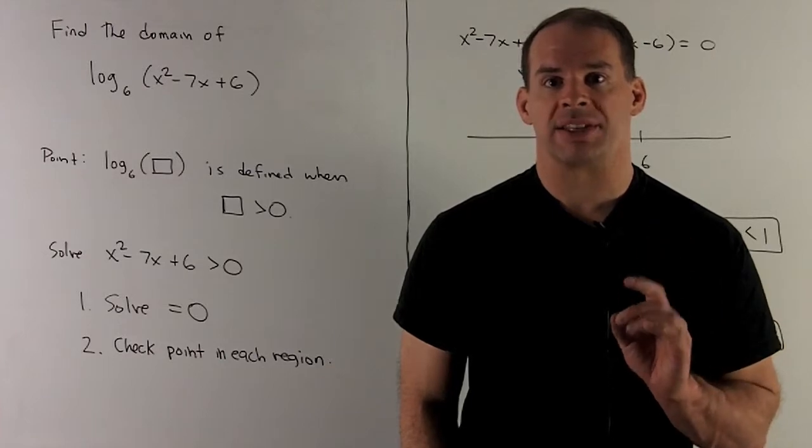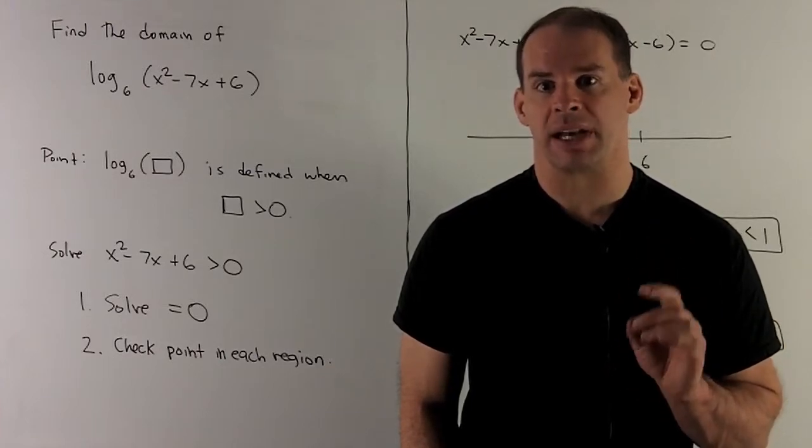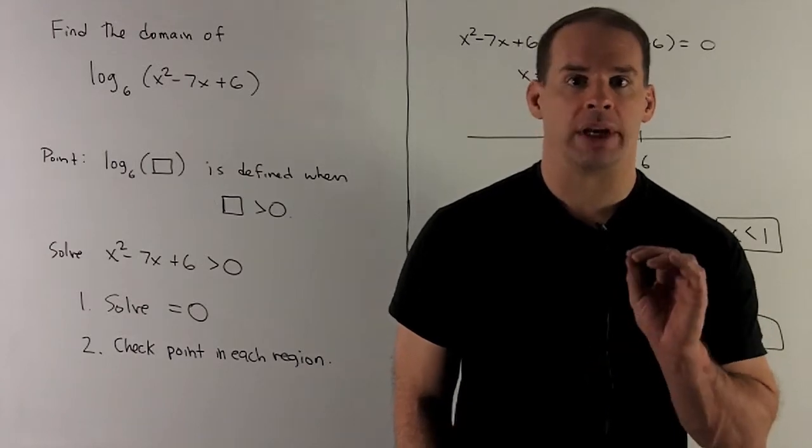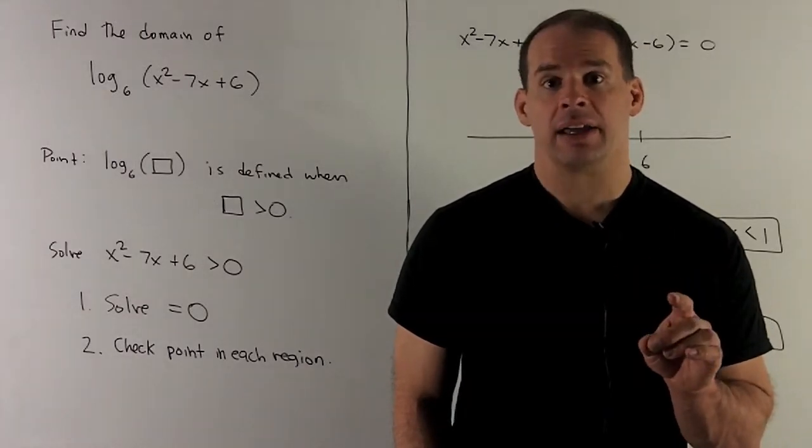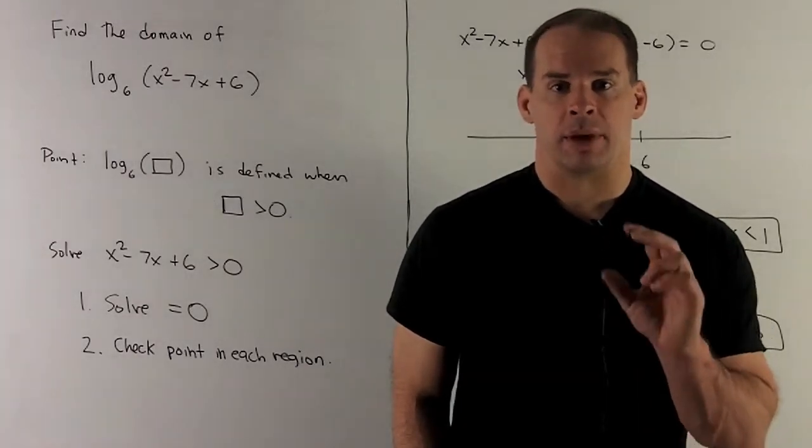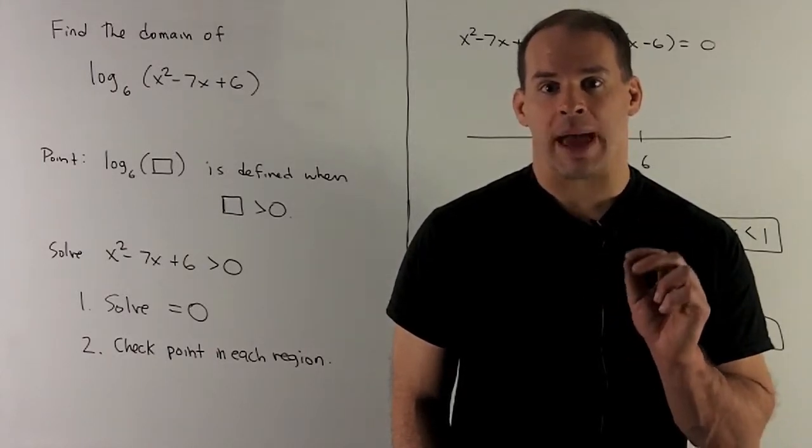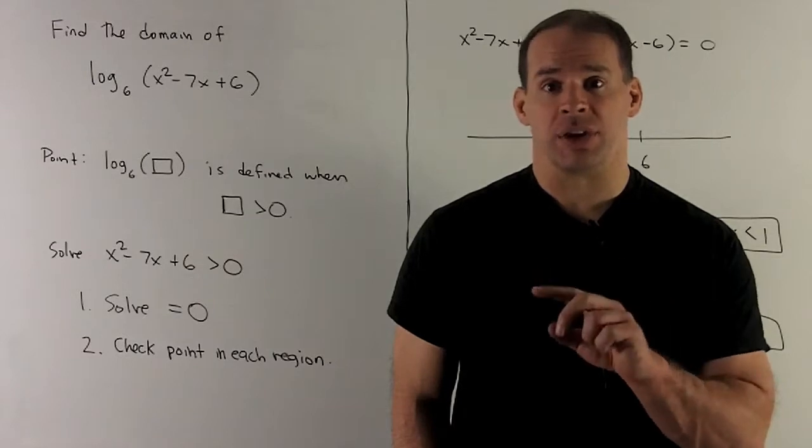Find the domain of log base 6 of x squared minus 7x plus 6. The point here is when I take log to any base, if I put a box inside, it's only going to be defined when that box is bigger than 0.